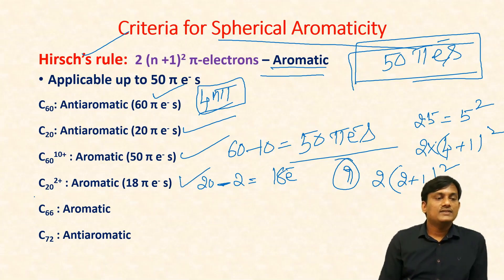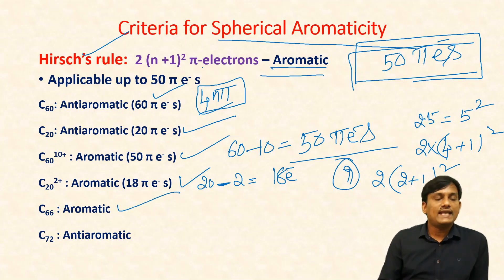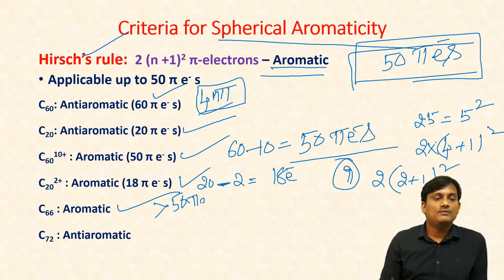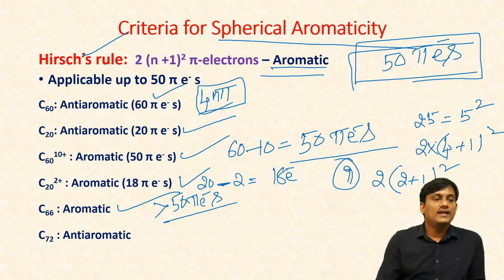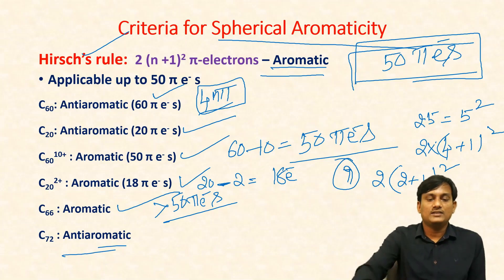C66 is also aromatic, but it cannot be explained by Hirsch's rule since it has more than 50 pi electrons. C72 is anti-aromatic.